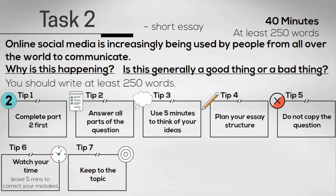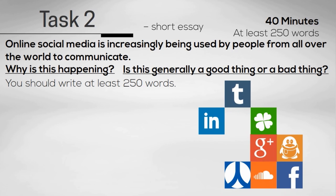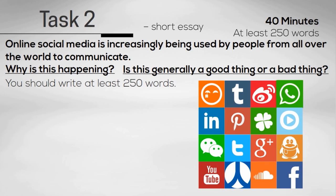Tip number 7 is to make sure you answer the question and you keep to the topic. In this essay, if you only describe the type of social media people use, you would not be answering the question and you would get a lower score. If you wrote about how certain social media websites are restricted by companies or governments, this would be going off topic. This means a lower score.